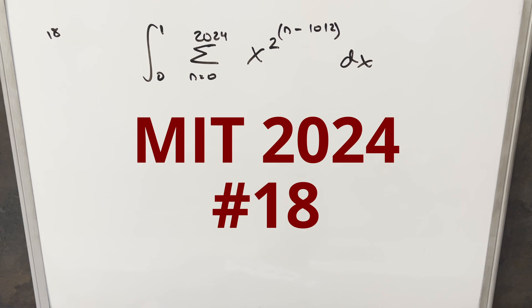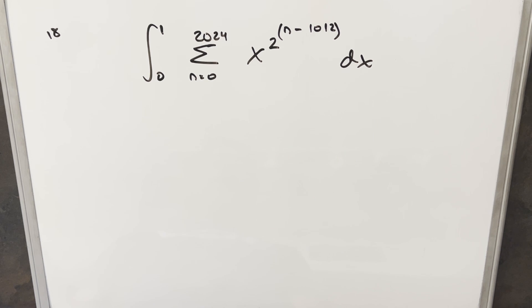We have the integral from 0 to 1 of the sum from n equals 0 to 2024 of x to the 2 to the n minus 1012 dx.